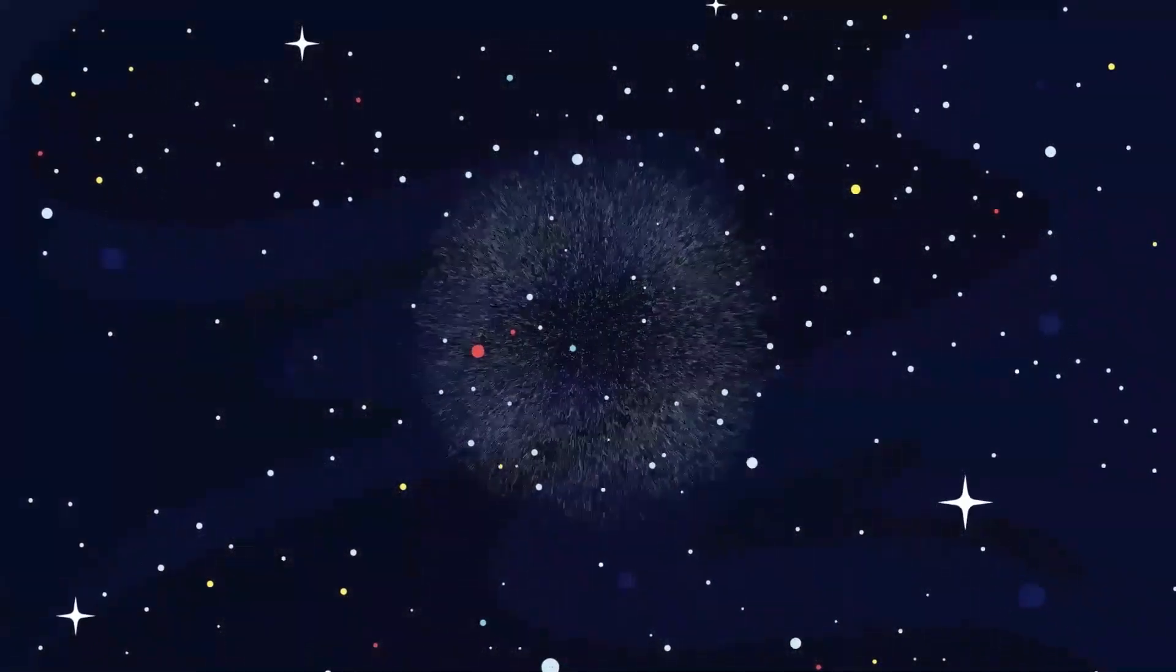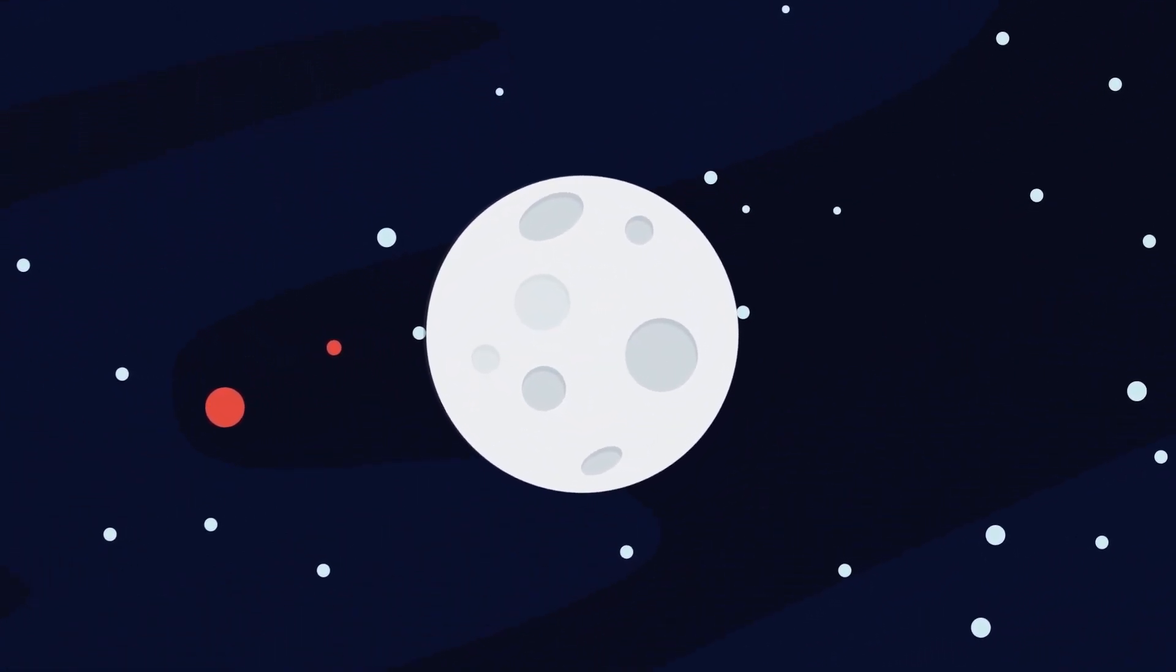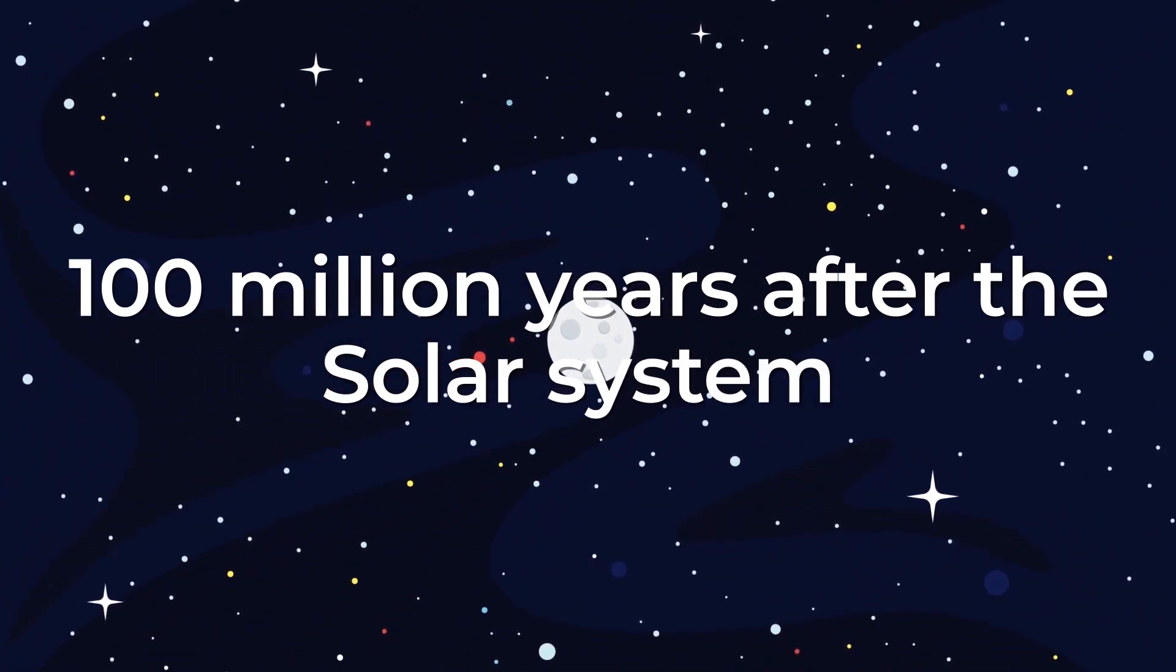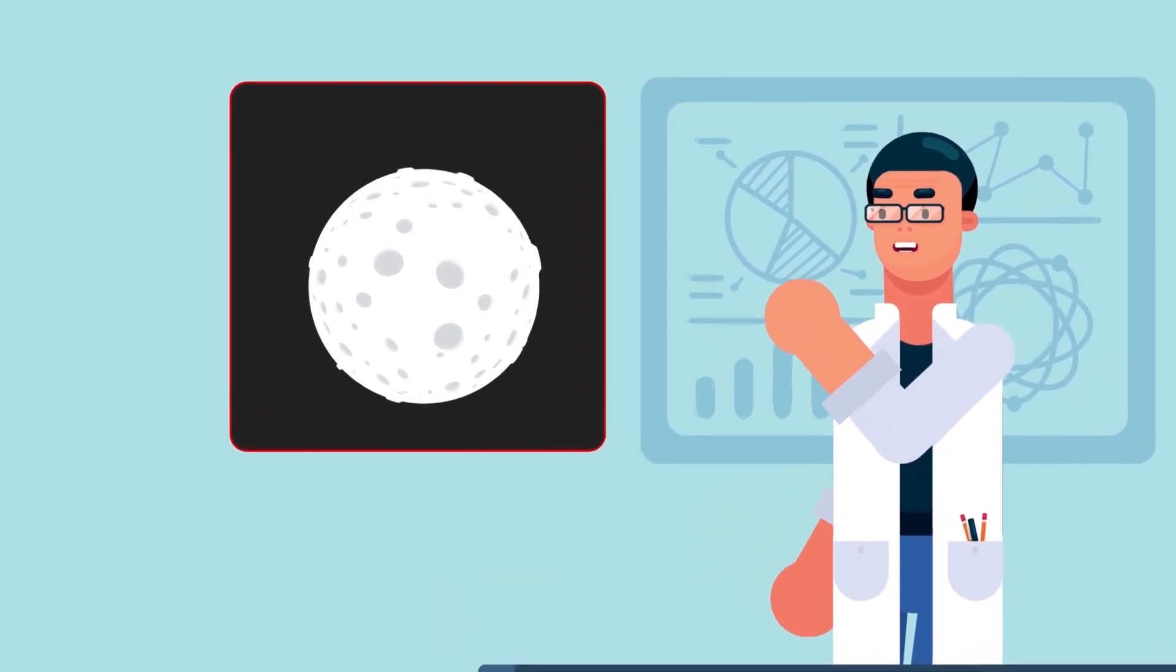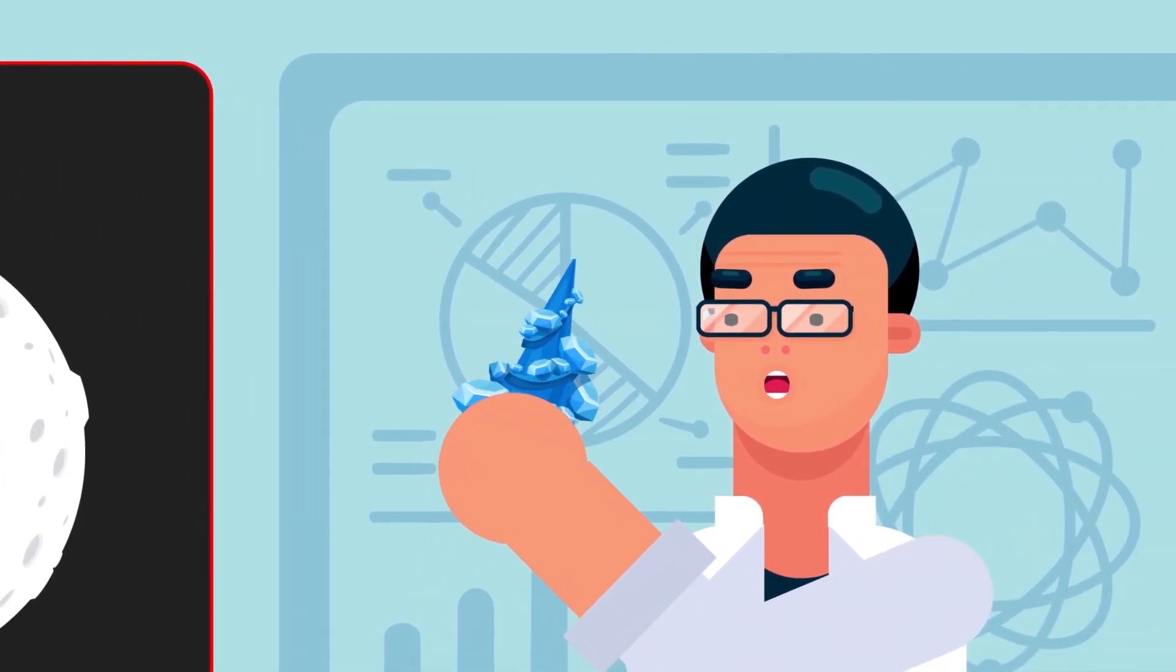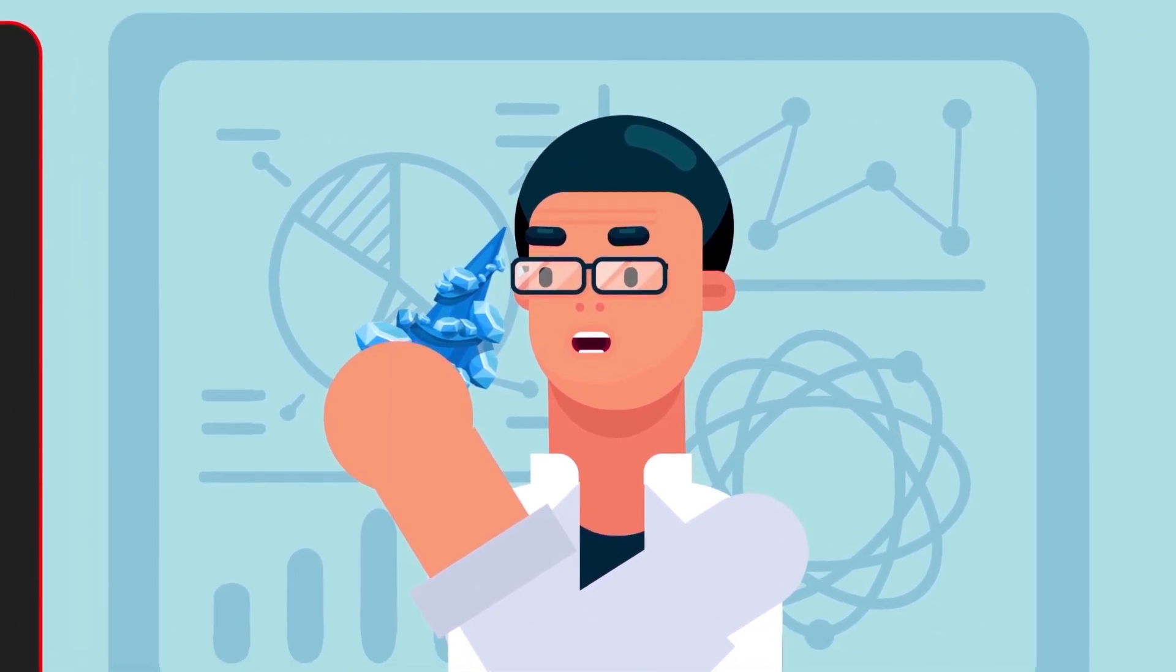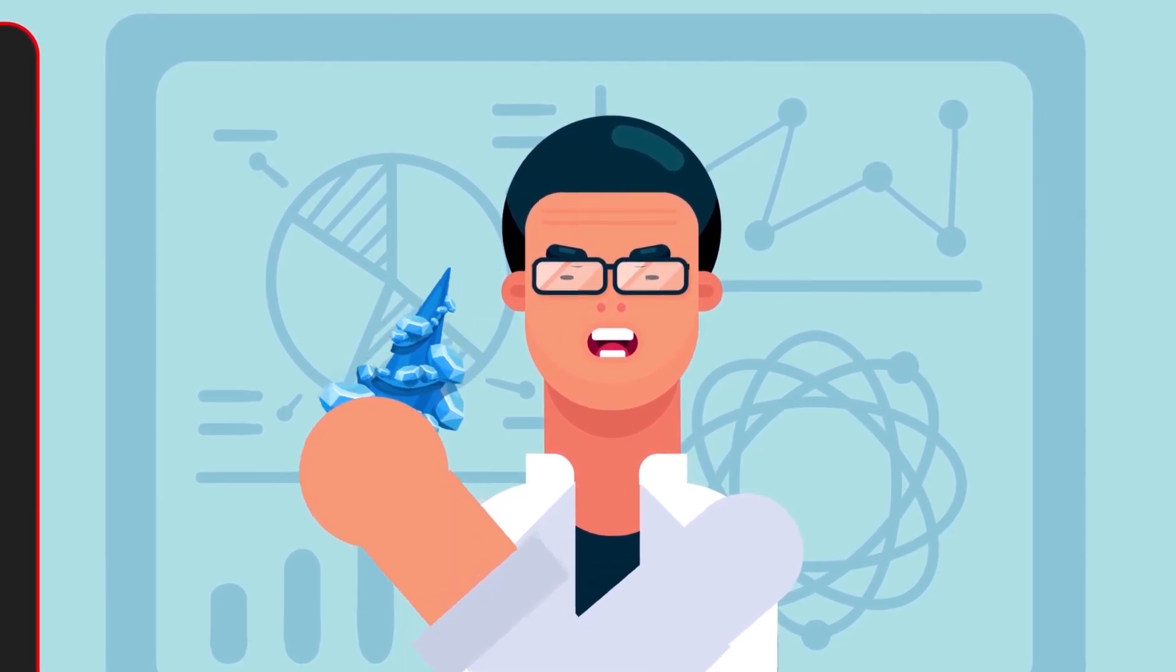But even this theory remains only that. A theory. We still don't know exactly how the Moon came into being. Moreover, scientists even argue about its age. Some say that the satellite was formed about 100 million years later than the solar system. Others argue that this figure must be at least doubled. Back in 2017, a group of scientists stated that they had accurately established the age of the Moon, setting it 4,510,000,000 years. They studied zircon crystals from rock samples brought back by the Apollo mission. This is indeed one of the most accurate ways to determine the age of something ancient on the Earth. But there is concern that this method may not work so well with extraterrestrial samples.